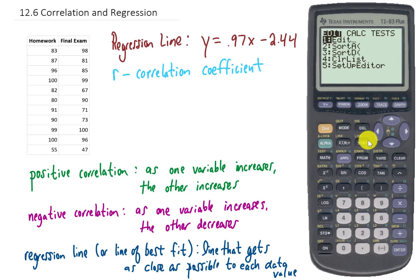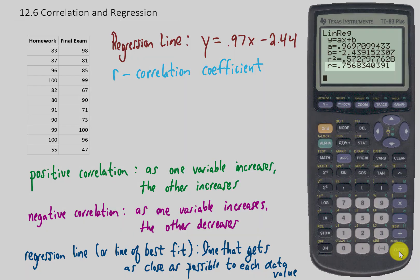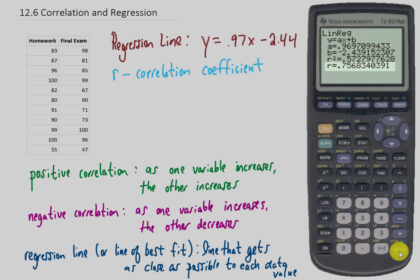If I go back to Stat, hit the right arrow to go to Calc, and then choose Option 4, and hit Enter. Now you'll notice that our calculator spits out several more values, including our R value, or our correlation coefficient. For this problem, we have a correlation coefficient of about 0.757.